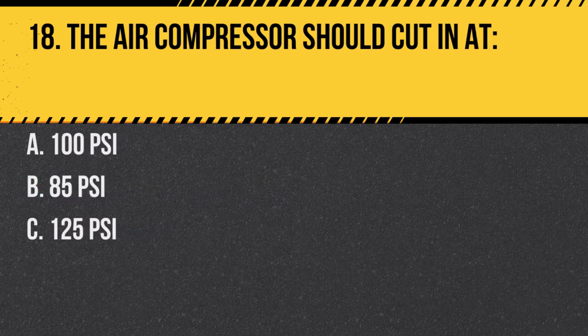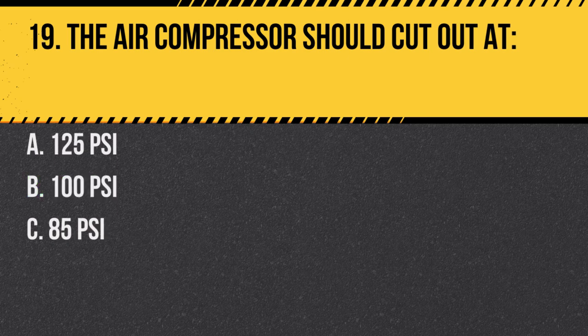Question 18. The air compressor should cut in at: A. One hundred psi. B. Eighty-five psi. C. One hundred and twenty-five psi. Answer B. Eighty-five psi. This ensures the system maintains adequate air pressure.